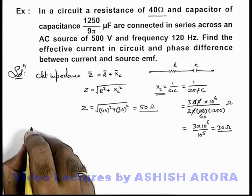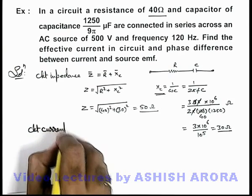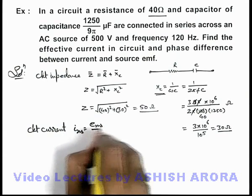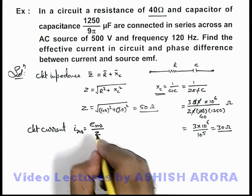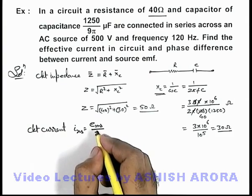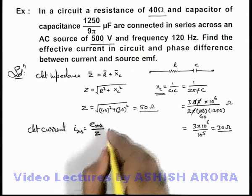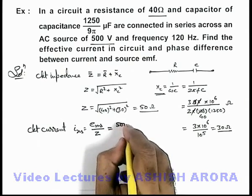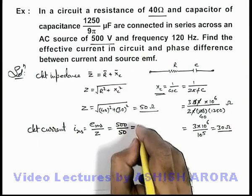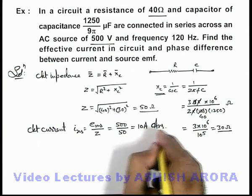If we calculate the effective current in the circuit, the RMS current is given by I_rms = E_rms divided by Z. Here the AC EMF source is 500 volts, so this is 500 divided by 50. Therefore, the effective current in the circuit is 10 amperes.